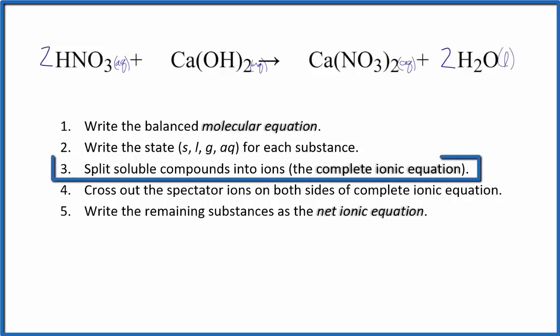We then split the soluble substances into their ions. On the periodic table, hydrogen's in group 1, it has a 1 plus charge, and in nitrate, NO3-, that's a polyatomic ion with a 1 minus charge. Calcium group 2 has a 2 plus charge, and then OH, that's the hydroxide ion.